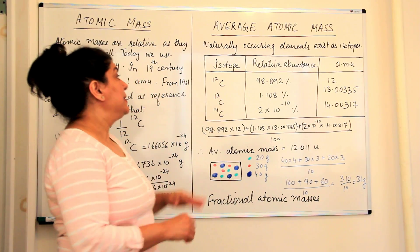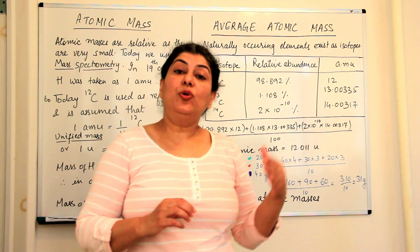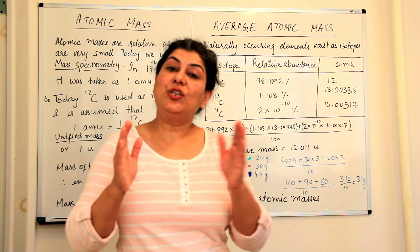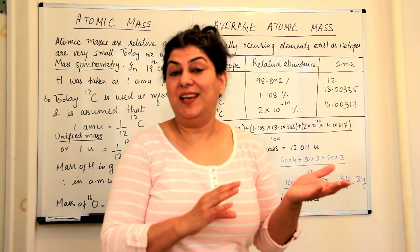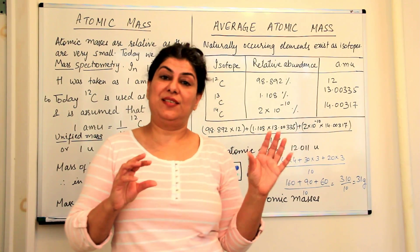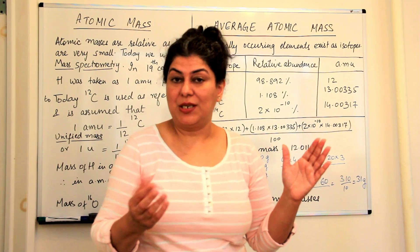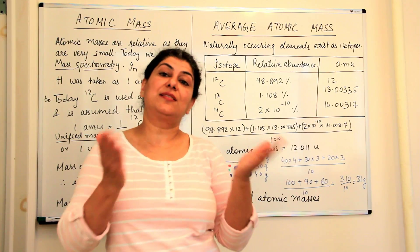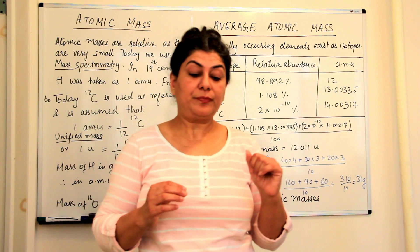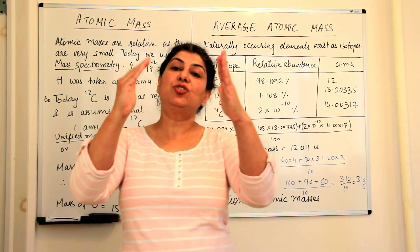But the other reason for fractional masses in the periodic table is isotopes. As I told you in the previous video discussing Dalton's atomic theory, isotopes are atoms of the same element which have the same atomic number but different mass numbers — same number of protons but different number of neutrons. Since the number of protons decides the element, they are the same element, but their different neutron counts give them different masses.